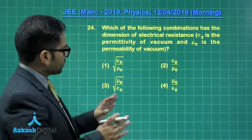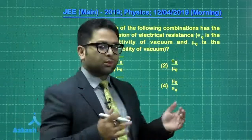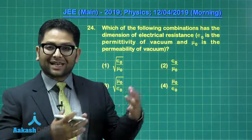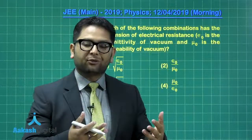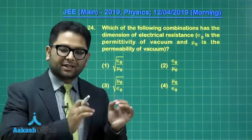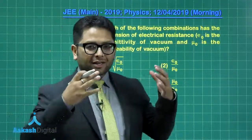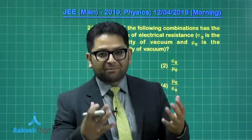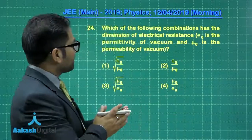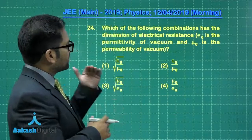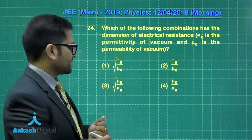Question 24 is from dimensional analysis. In this type of exam, the regular dimensional approach isn't expected — some craftsmanship and tricky thinking are required. The question asks: express resistance in terms of ε₀ (epsilon naught) and μ₀ (mu naught).